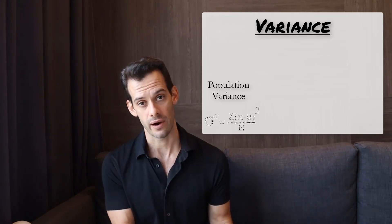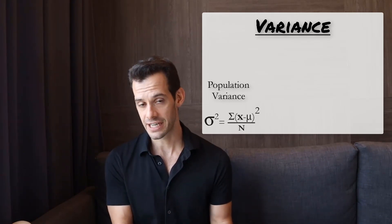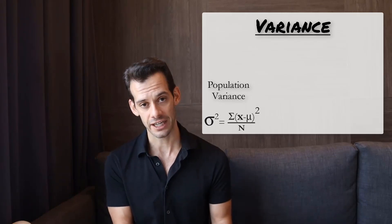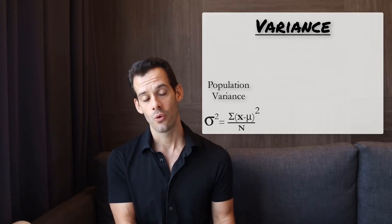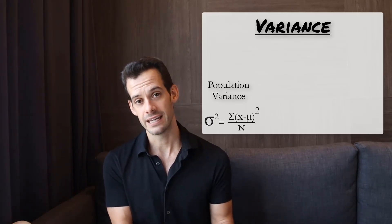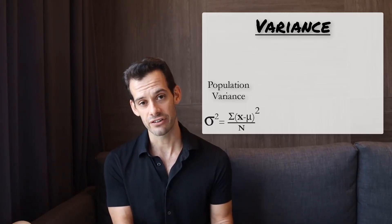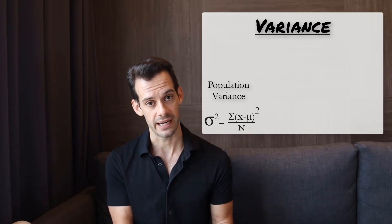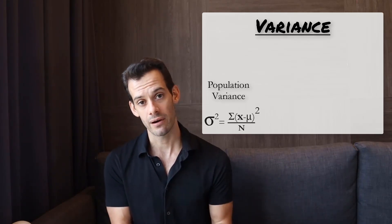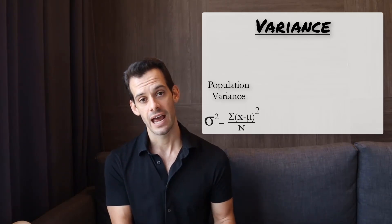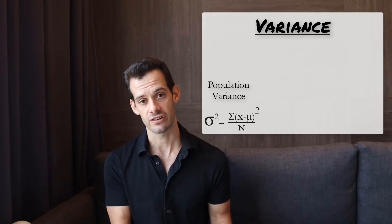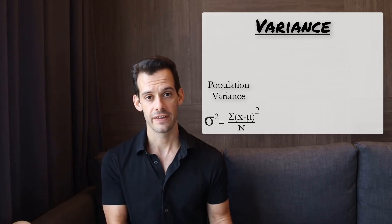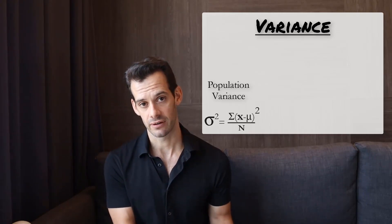Let's start by looking at the formula for the variance of the population, sigma squared. If we actually have access to the whole population and can measure everyone, then we find the deviation from mu — the population mean — square the deviation, add up all of those squared deviations, and divide by N. This will give us the variance of the population.